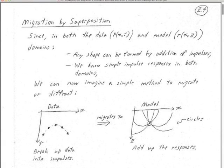I've shown you two FK Frequency Wave Number Migration Methods. The Stolt migration is the second one, and it's the most widely used one. The problem with Stolt migration is that it requires one velocity. So you've got to do a bunch of noodling around if you want to have different velocities at different depths or different places.